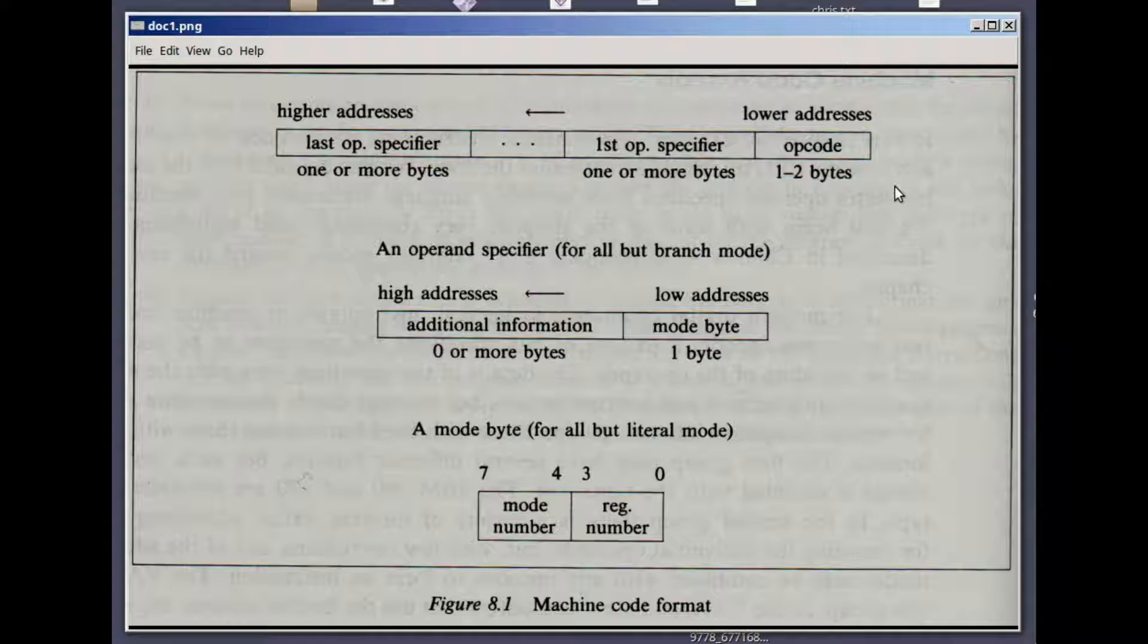Now the instruction format consists of an opcode, which can be one or two bytes. That should give you pause right there. One byte means you can have 256 instructions, theoretically. Two bytes means you can have a lot more. So it did have a one or two byte instruction code here, opcode, and there were a lot of instruction codes.